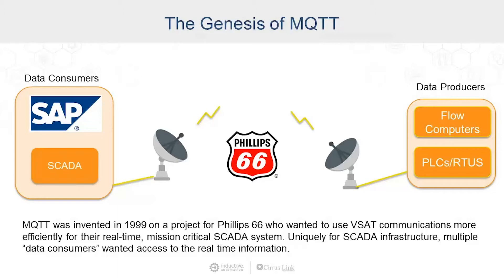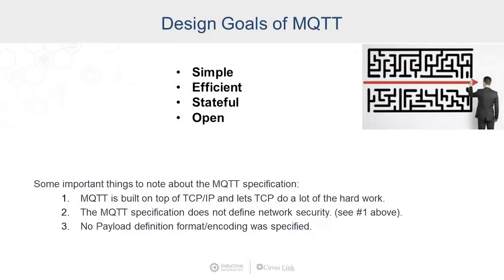On this VSAT system, the aggregate bandwidth was around 300 baud. So the design goals of MQTT were: number one, it had to be simple. Our hardware platforms were 8-bit microprocessors with a maximum of 64 kilobytes of memory, so it had to be deployed on very small embedded systems in the field.